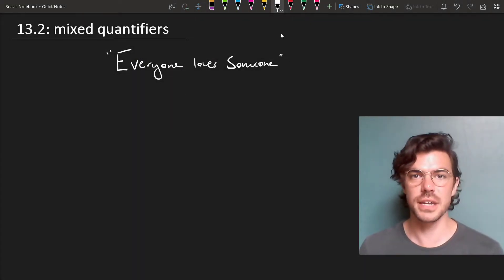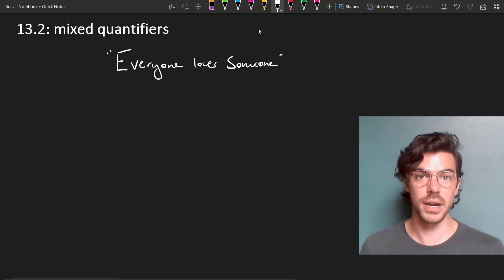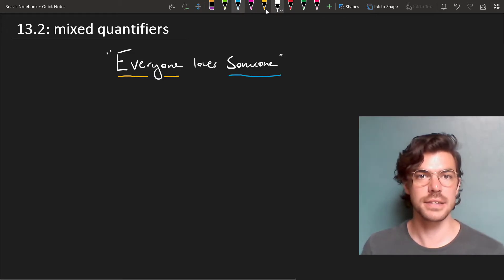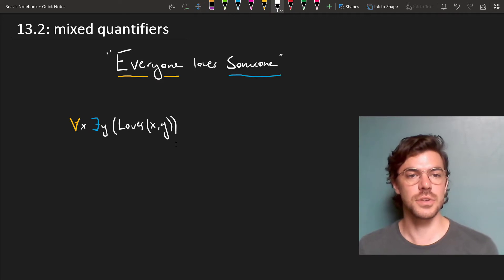Let's have a look at a famous ambiguous sentence: everyone loves someone. There are two ways to take this. The most natural way reads the everyone to have scope over the someone. So we would write this as, for every x there exists a y such that x loves y.